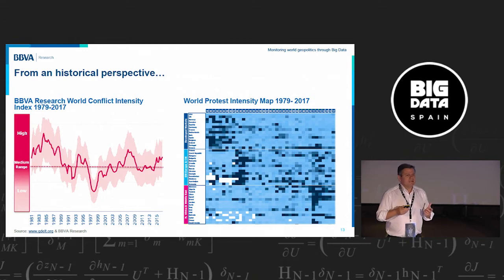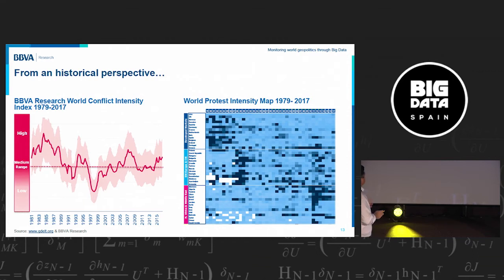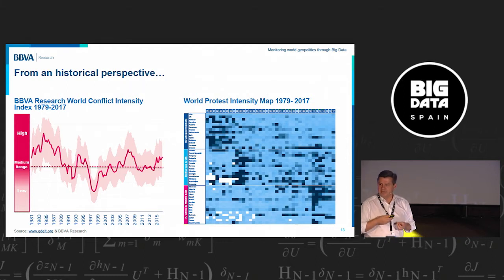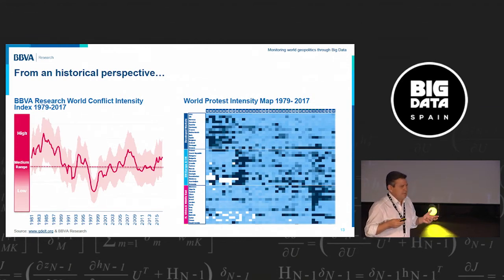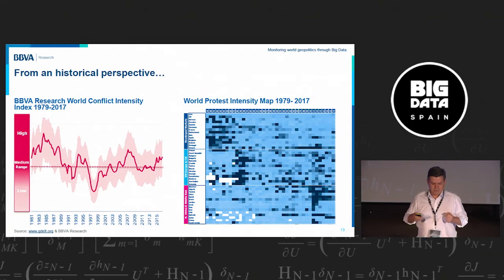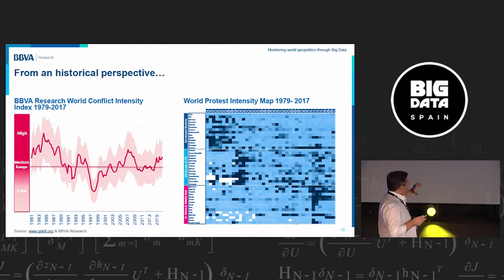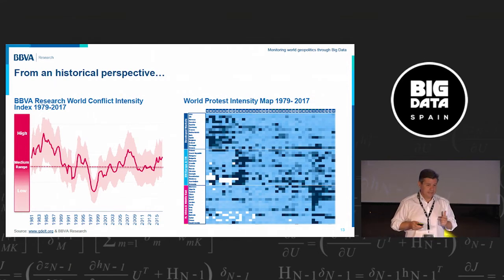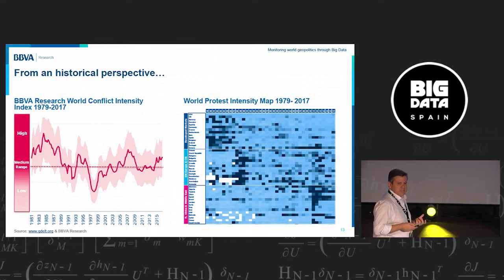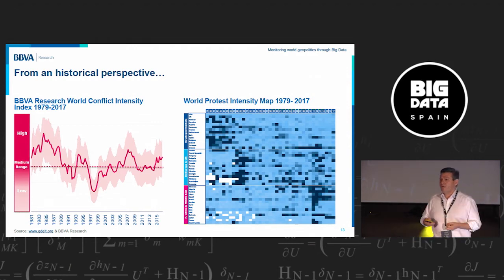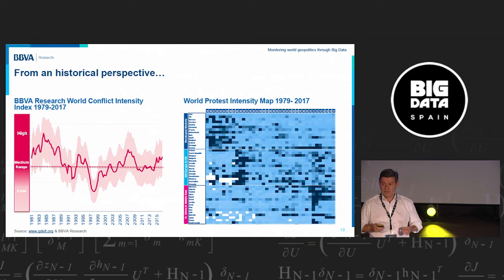An interesting case is the Middle East. Although it's a conflict zone, there were not too many people protesting for several reasons, so you see relatively light blue — peaceful moments — until 2011 and the beginning of the Arab Spring. The map shows how sudden the change was and how it spread to other countries. One thing we are monitoring now is that the situation remains unresolved in some of these countries — it continues in dark blue.